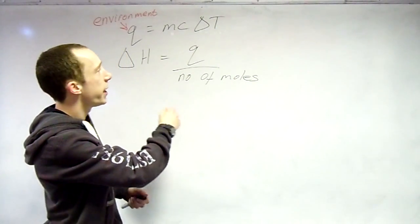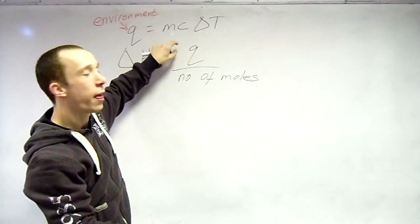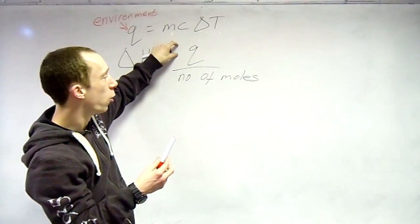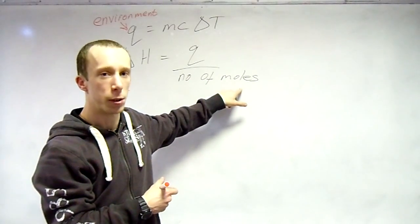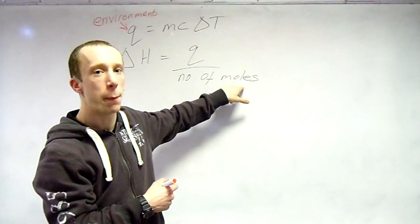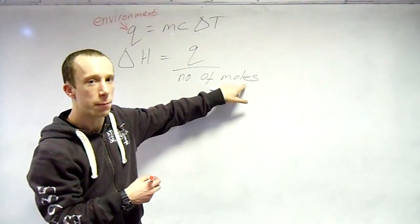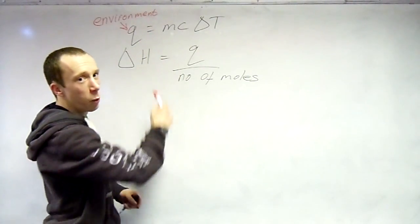For working out delta H, once you have worked out the energy change to the environment, then we will flip the symbol here. We will explain why in a moment. The number of moles, this is the number of moles of the chemical. So that is where your fuel that has been burnt, in the example we are going to do, will be put in. Remember, environment, water in there.